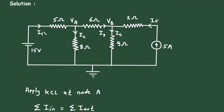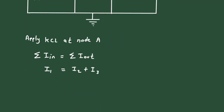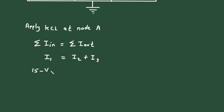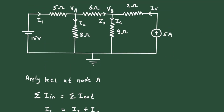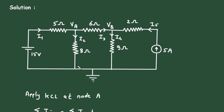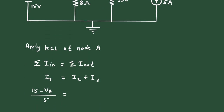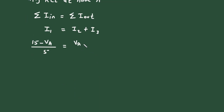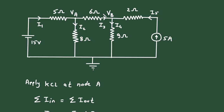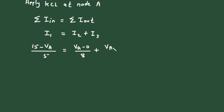We can write I1 in voltage form: it will be the higher voltage 15 volts minus the lower voltage Va, divided by the resistor. So (15 − Va)/R = I2. I2 will be Va minus 0 divided by 8. Then plus I3, where I3 will be Va minus Vb divided by 6.